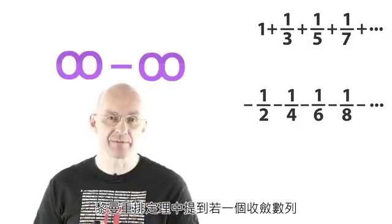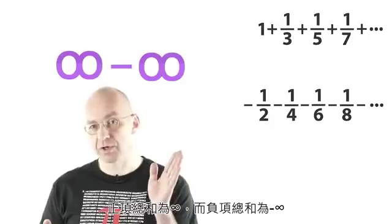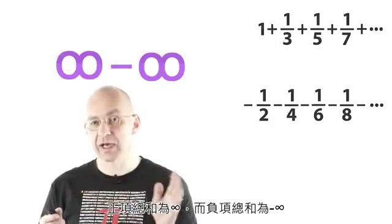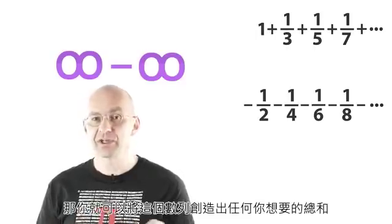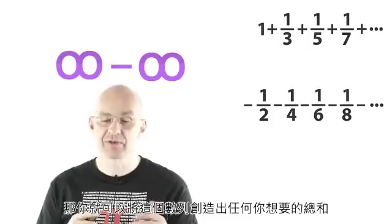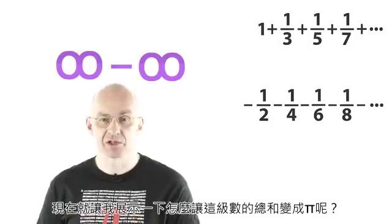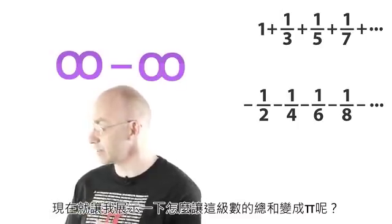What Riemann's rearrangement theorem now says is that if you've got a convergent series whose positive terms add up to infinity and whose negative terms add up to minus infinity, then you can rearrange the series into series that have any sum you want. So let me demonstrate this now for pi with this particular series.